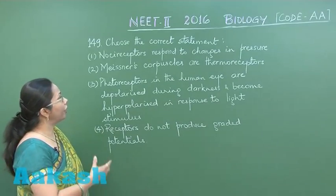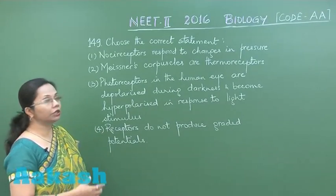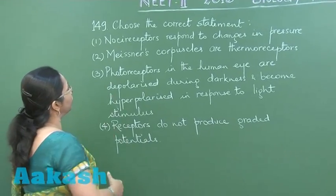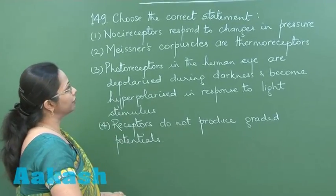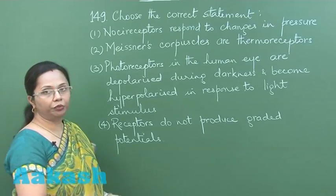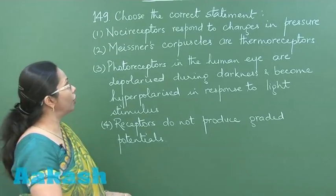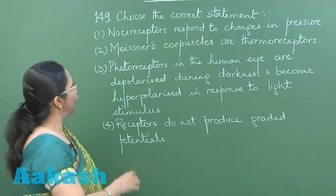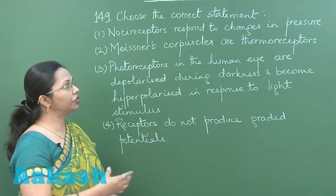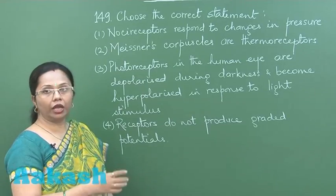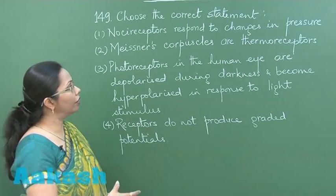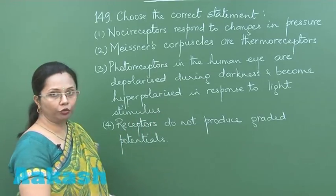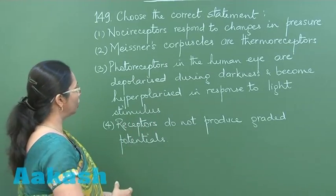In this question we have to choose the correct statement. The first statement — nociceptors respond to changes in pressure — is wrong because nociceptors are for pain. Meissner's corpuscles are present in the skin and they are tactile receptors, not thermoreceptors as stated, so that option is also wrong.